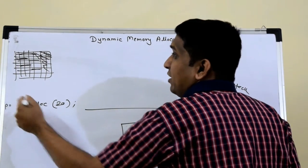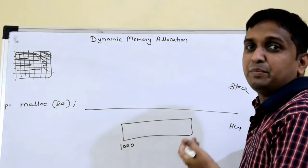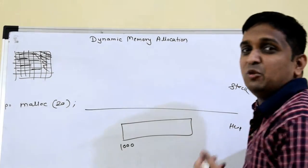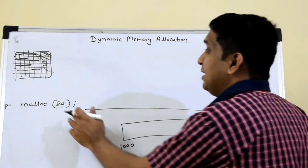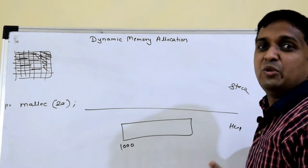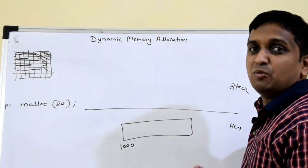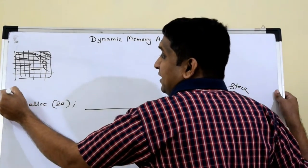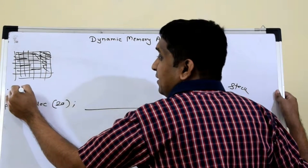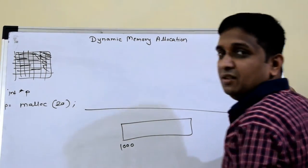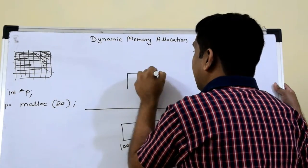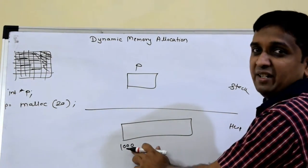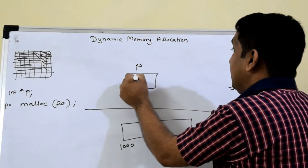The variable p should be declared as a pointer - int *p. Since I'm storing integer values, 20 bytes can store 5 integers because one integer is 4 bytes (5 × 4 = 20). So I declare it as an integer pointer: int *p. This pointer p will be allocated on the stack, and the returned address 1000 will be stored in p.